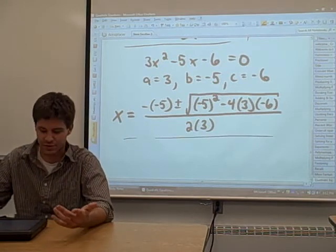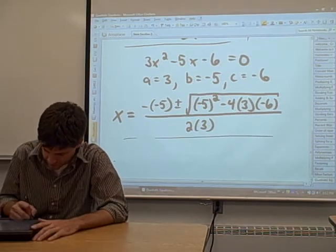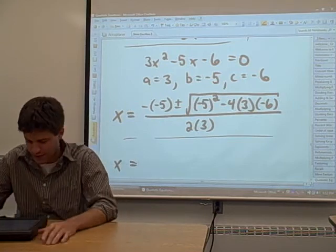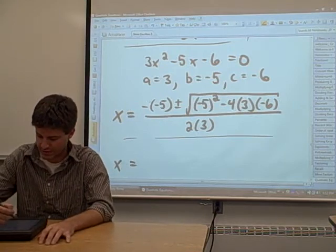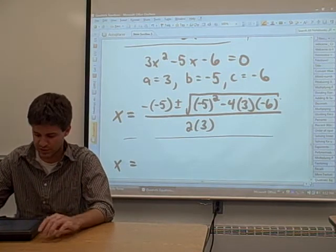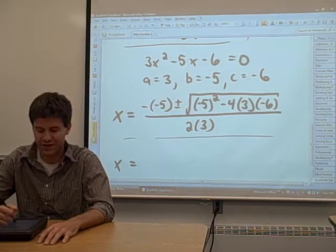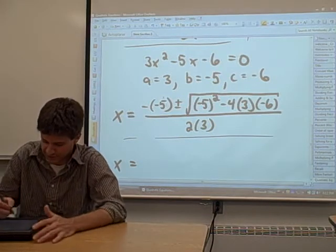Well, we need to simplify it a little bit, right? That looks pretty bad. So what we're going to do is just kind of go through and simplify as much as we can. This negative, negative 5, that becomes a positive 5.